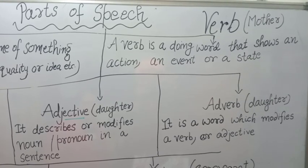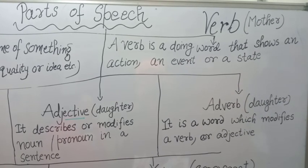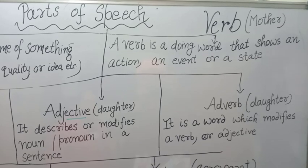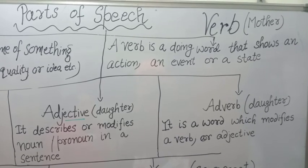A verb is a doing word that shows an action, an event or a state. We have examples: run, play, sing, go, watch.